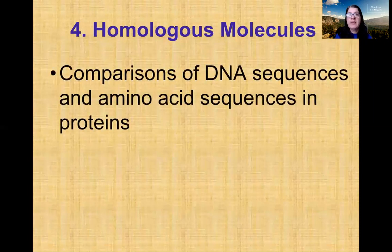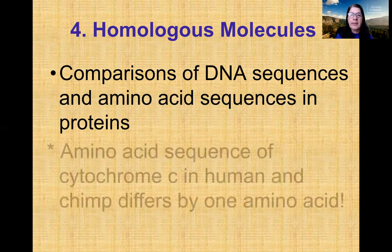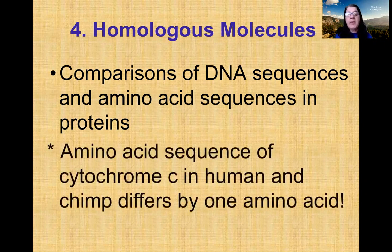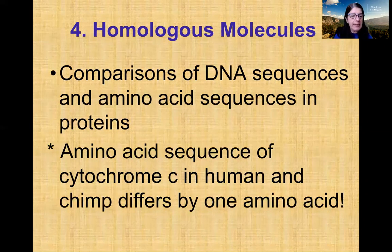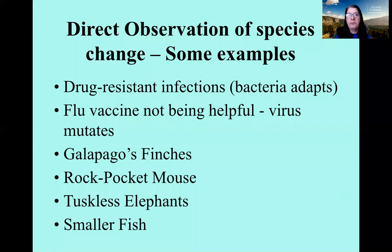Homologous molecules are another piece of evidence. By comparing DNA sequences or amino acid sequences in proteins, we can determine how closely related organisms are and establish their relatedness. For example, the amino acid sequence of cytochrome C — the last protein in the electron transport chain, which hands electrons to oxygen — differs between humans and chimps by only a single amino acid difference.